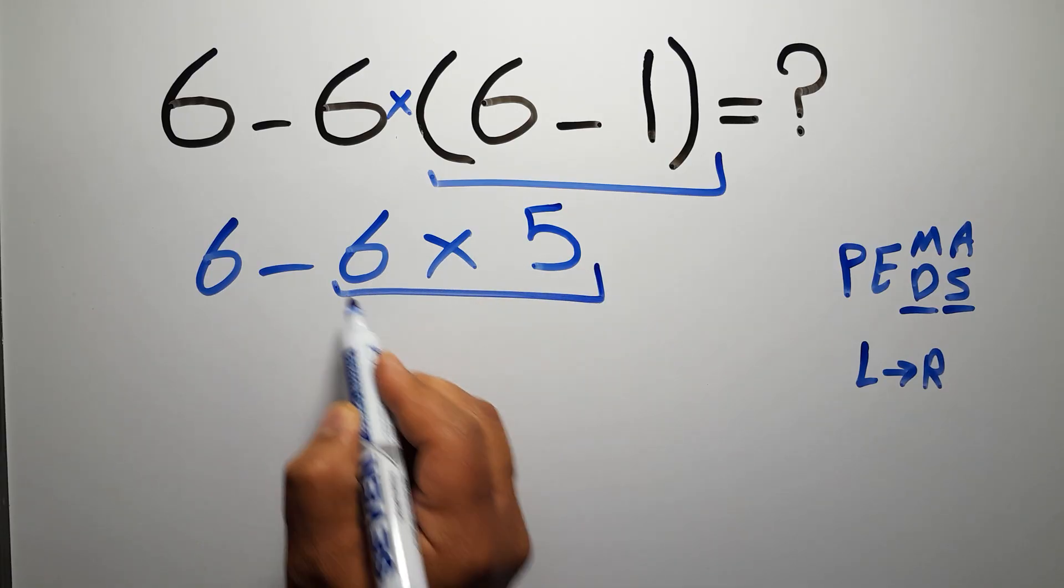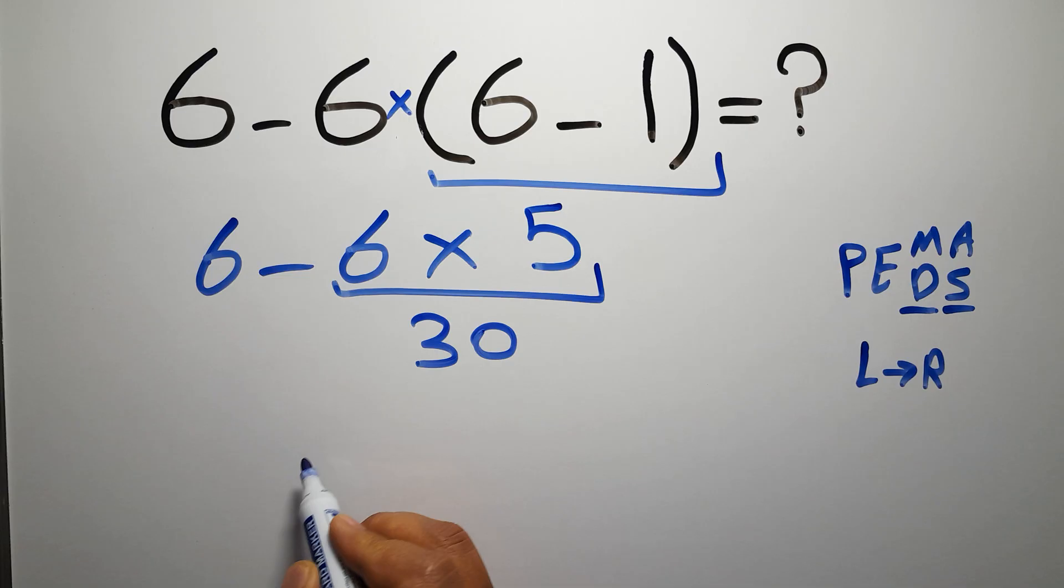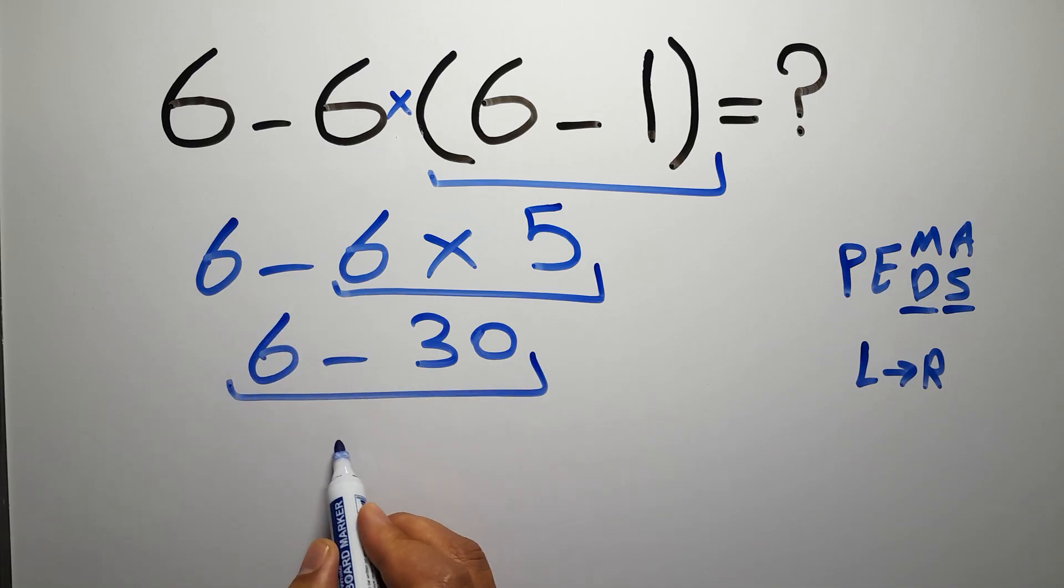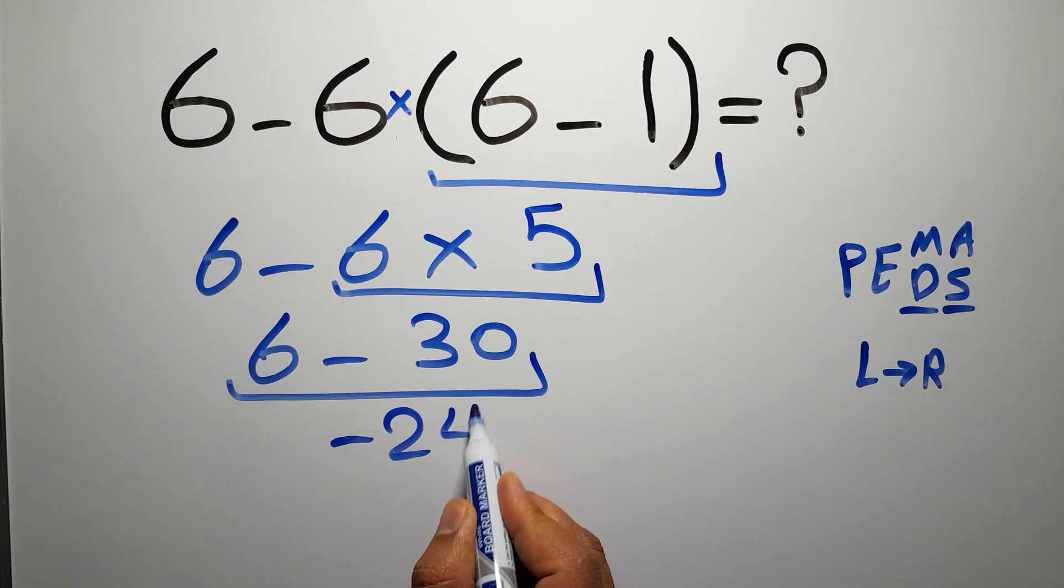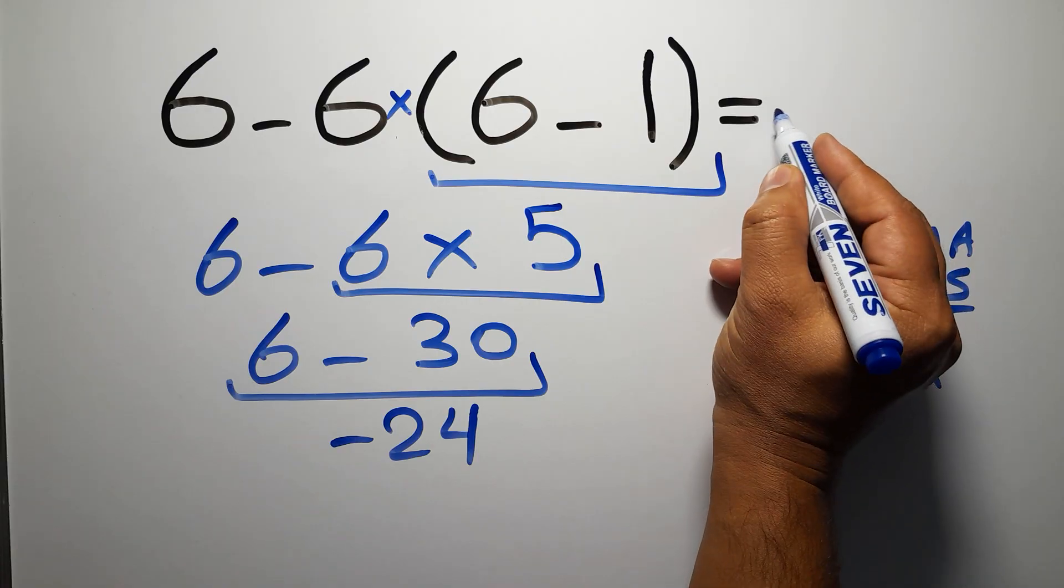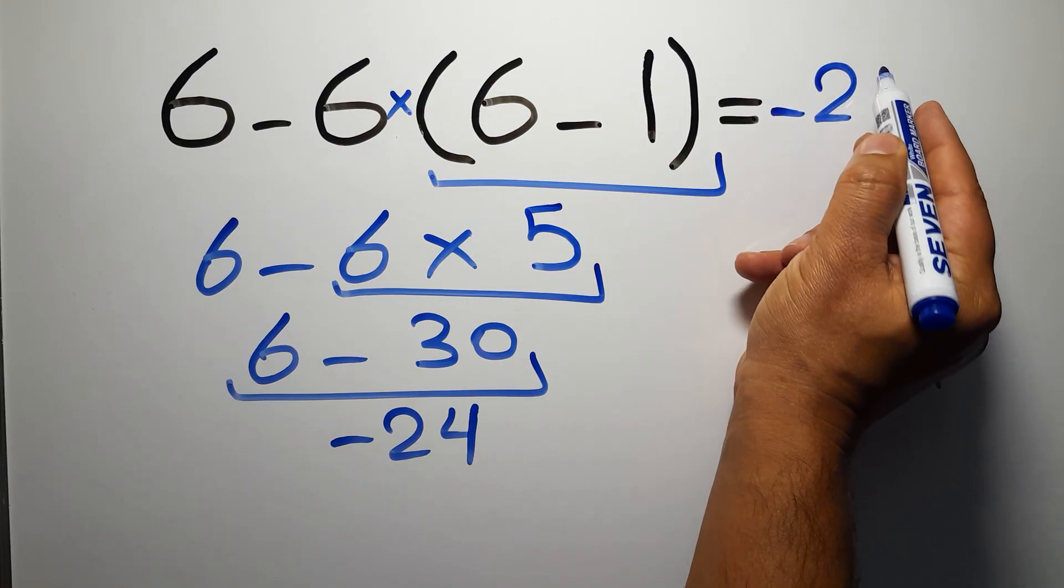6 times 5 gives us 30. So, 6 minus 30, which equals negative 24. And this is our final answer to this problem. The correct answer is negative 24.